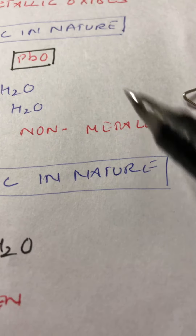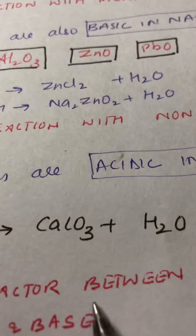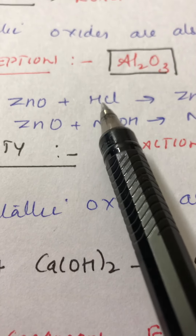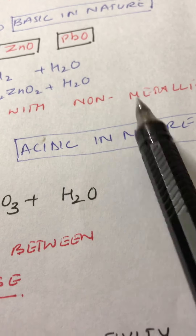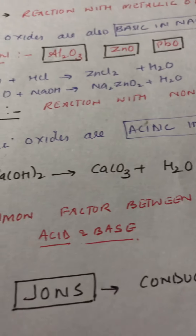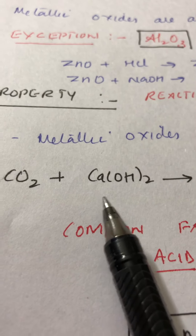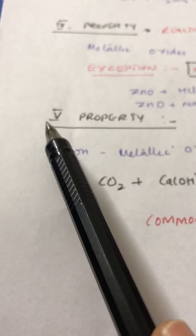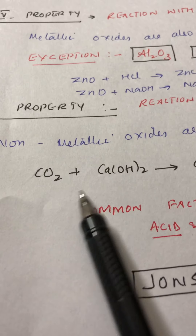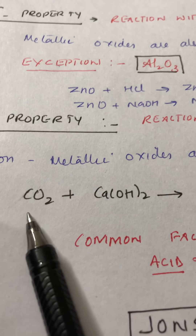Since metallic oxides are basic, non-metallic oxides are acidic in nature. Hence, non-metallic oxides will react only with bases. For example, carbon dioxide is a non-metallic oxide and is acidic.